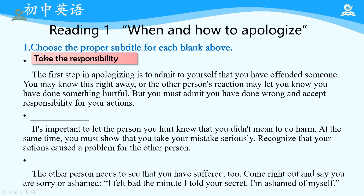The first subtitle should be 'Take the Responsibility.' We can find the word responsibility in the text. Taking the responsibility means admitting to ourselves that we have offended someone, or admitting that we have done wrong and accepting responsibility for our own actions. The second one should be 'Explain' — to explain what to the other person. Sometimes we are expected to show that we didn't mean to do harm, we didn't do it on purpose. At the same time, we need to show that we take our mistake seriously, and there should also be recognition that our actions have caused a problem for the other person.